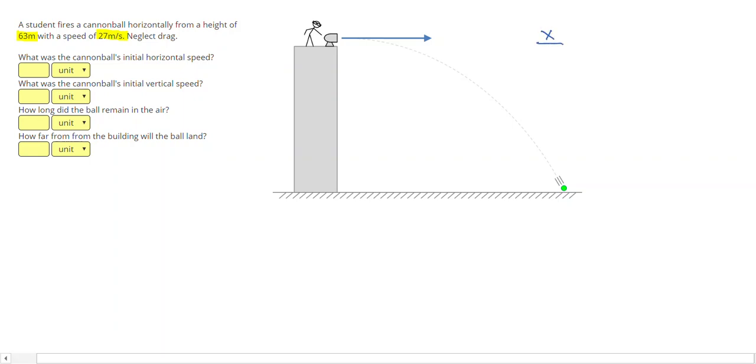So I need to set up kind of two parts of this problem, the x or horizontal part of the problem, and the y which is the vertical part of the problem. So under each of these, I'm going to write initial speed, average speed, final speed, distance, time, and acceleration.